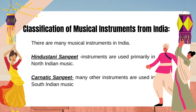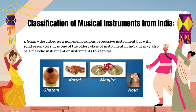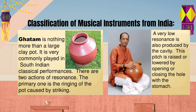Instrumental music: There are many musical instruments in India. Some instruments are used primarily in North Indian music (Hindustani Sangeet), while many other instruments are used in South Indian music (Carnatic Sangeet). Instrumental music is often similar to vocal music but sometimes they have distinctive instrumental styles. There are five known traditional systems for classification of instruments. Classification: Ghan — described as a non-membranous percussive instrument with solid resonators. It is one of the oldest classes of instruments in India. Ghatam is a large clay pot, very commonly played in South Indian classical performances.